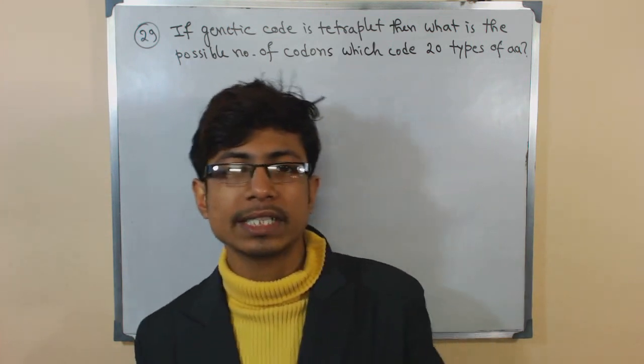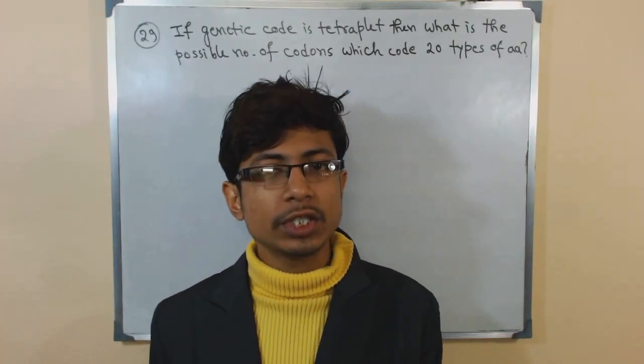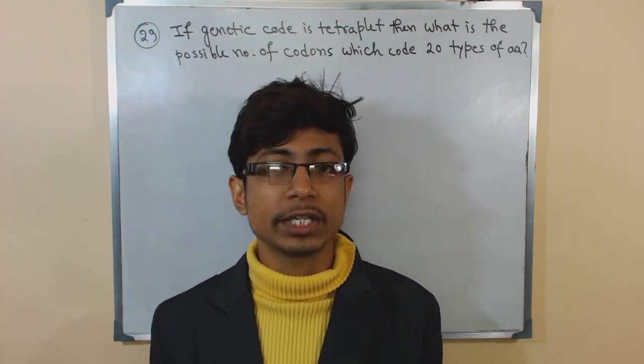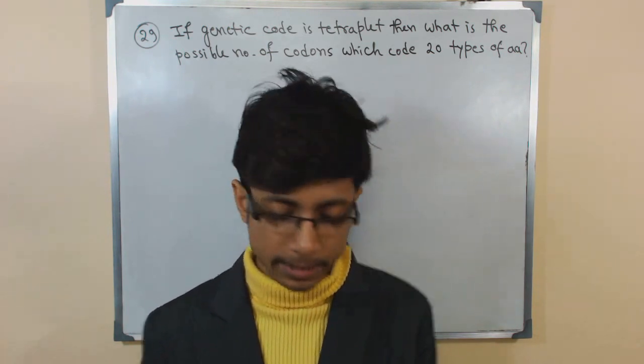Now you know in the normal case, the genetic code is a triplet. That means three bases are required to form a genetic codon, and each of those codons will produce one amino acid.